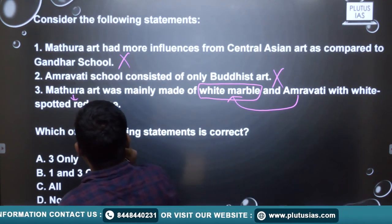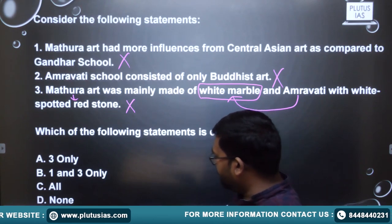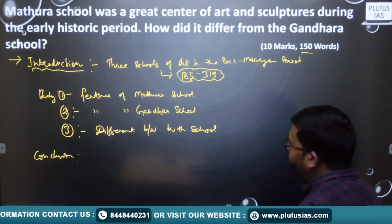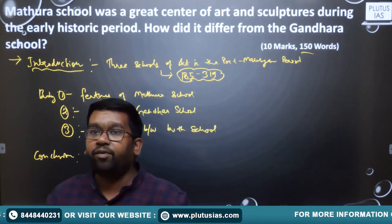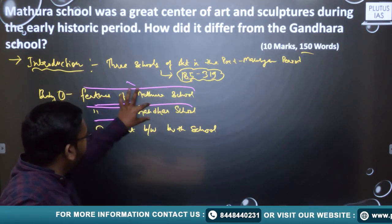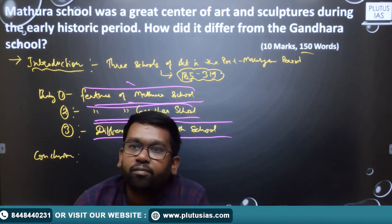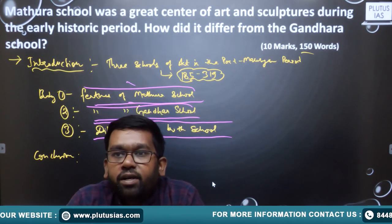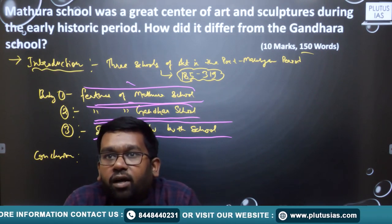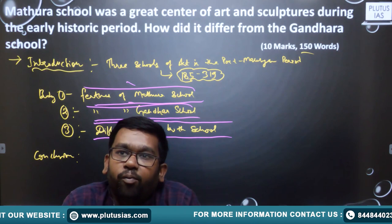Statement two: Mathura school consists of only Buddhist art — no, because we have seen Brahmanical and Jain images found in this art, so statement two is also false. Statement three: Mathura art was mainly made of white marble — Mathura was made of white-spotted red stone, while Amaravati was made of white marble. So this statement is also false. Therefore the answer will be D — none of the statements are correct. Similarly, for the subjective question, we discuss the features of Mathura art, then the features of Gandhara art, and then the differences between them.